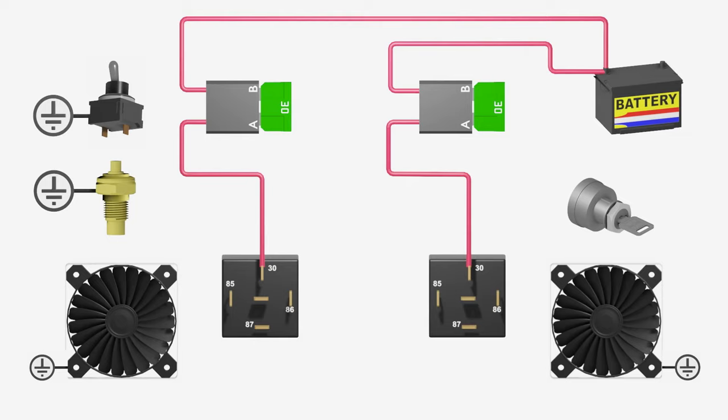The relay 86 circuit which is the keyed ignition source is set up in a similar way. Both relays share the same ignition source and this wire will be pink when using an American Autowire product.